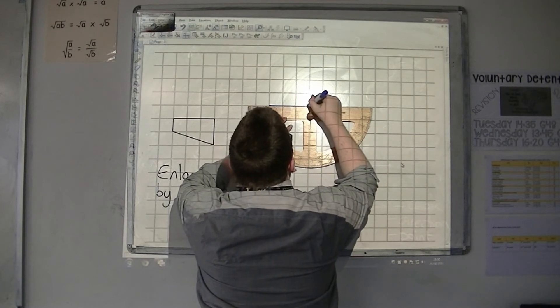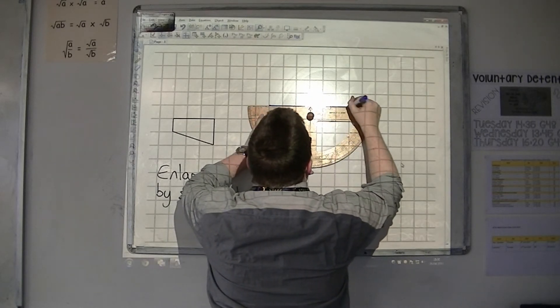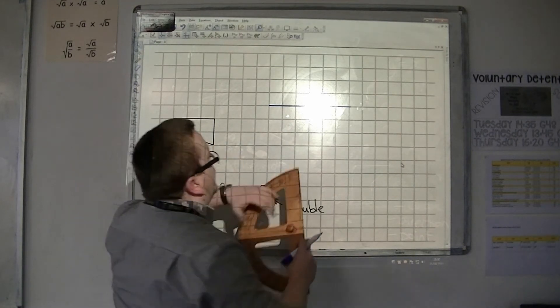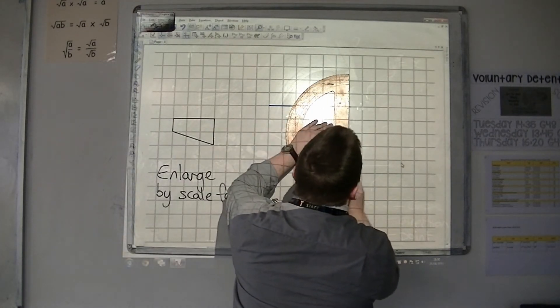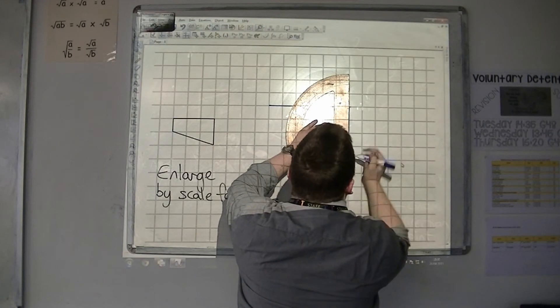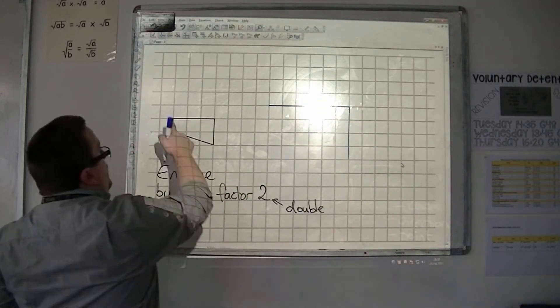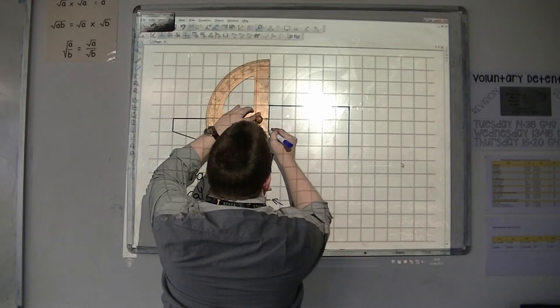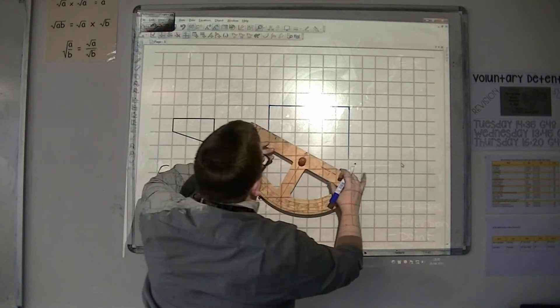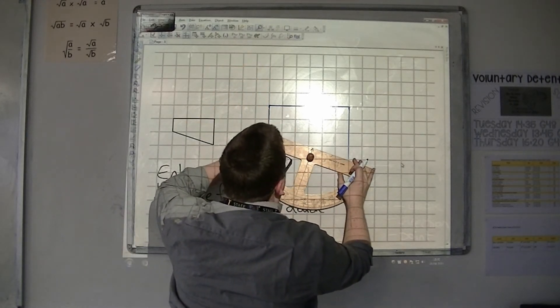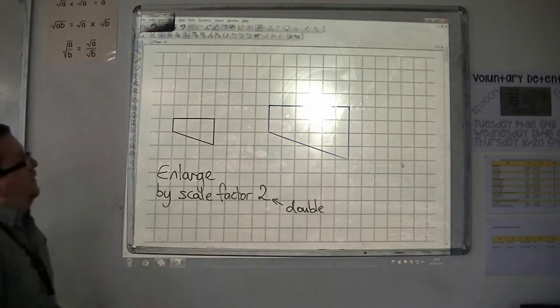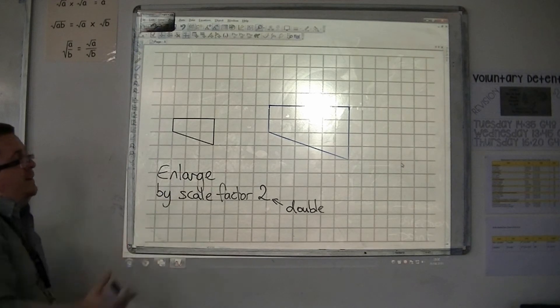So, 1, 2, 3, 4, 5, 6. This side is 2 squares long, so it should now be 4 squares long. This side is 1 square long, so it should be now 2, and then we can join up that last bit, like so. So, this is scale factor 2.